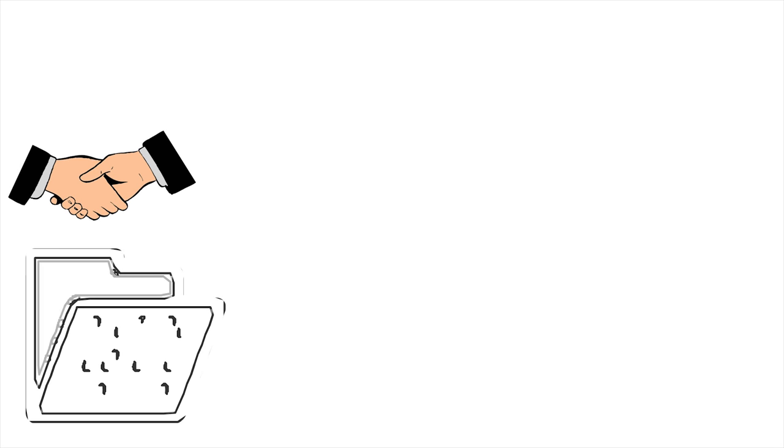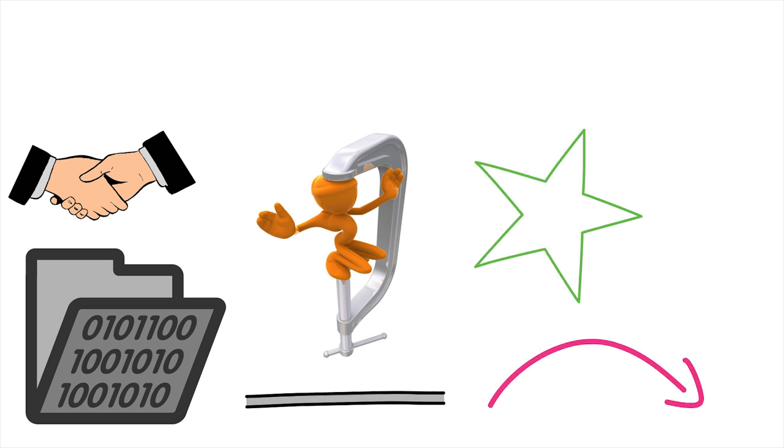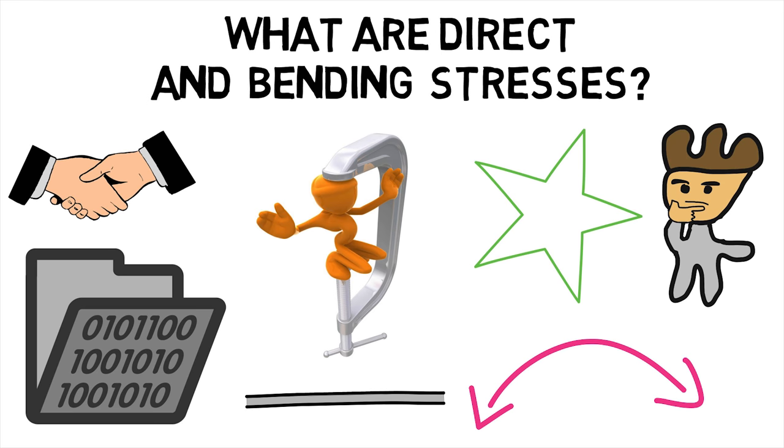Welcome back MechanicalEI. Did you know that direct and bending stresses are the two types of stresses which determine the shape in which a given rod undergoes buckling? This makes us wonder, what are direct and bending stresses?